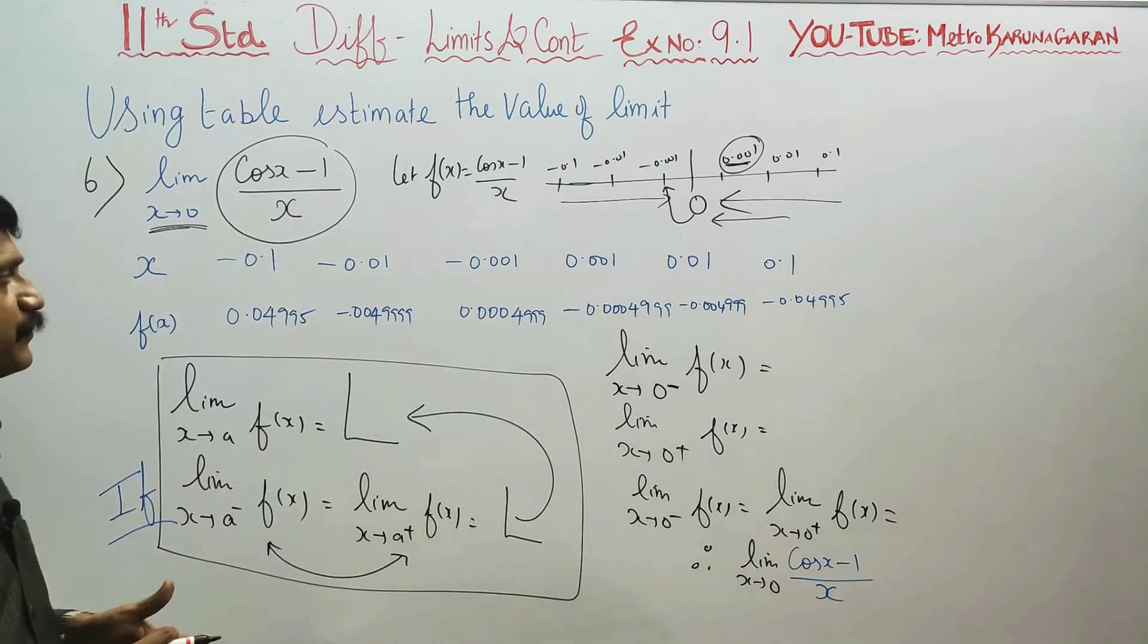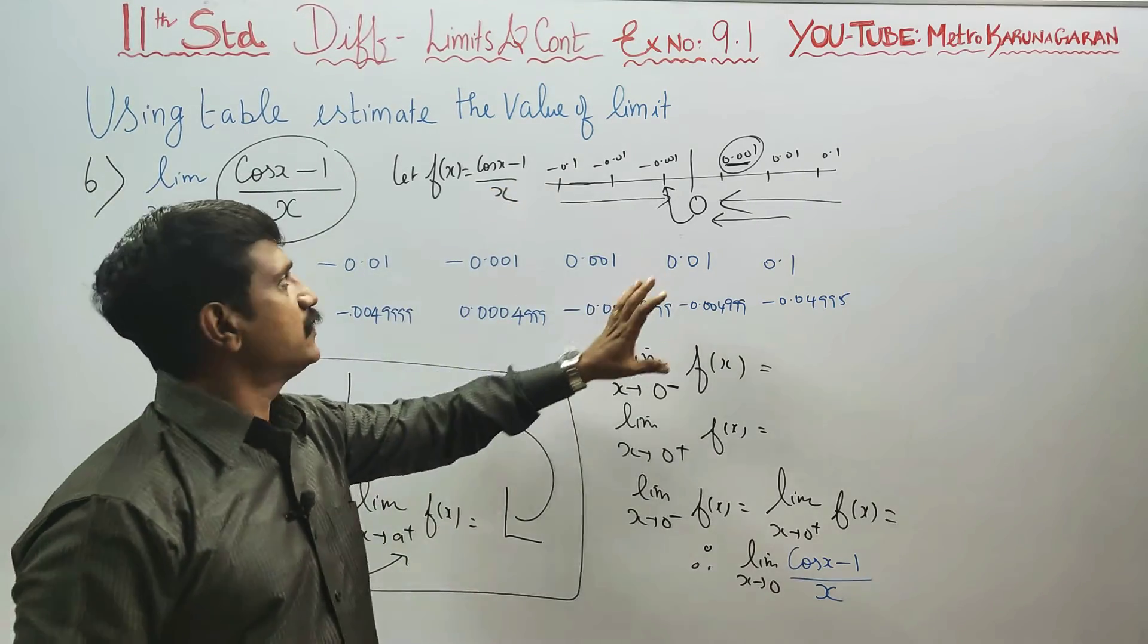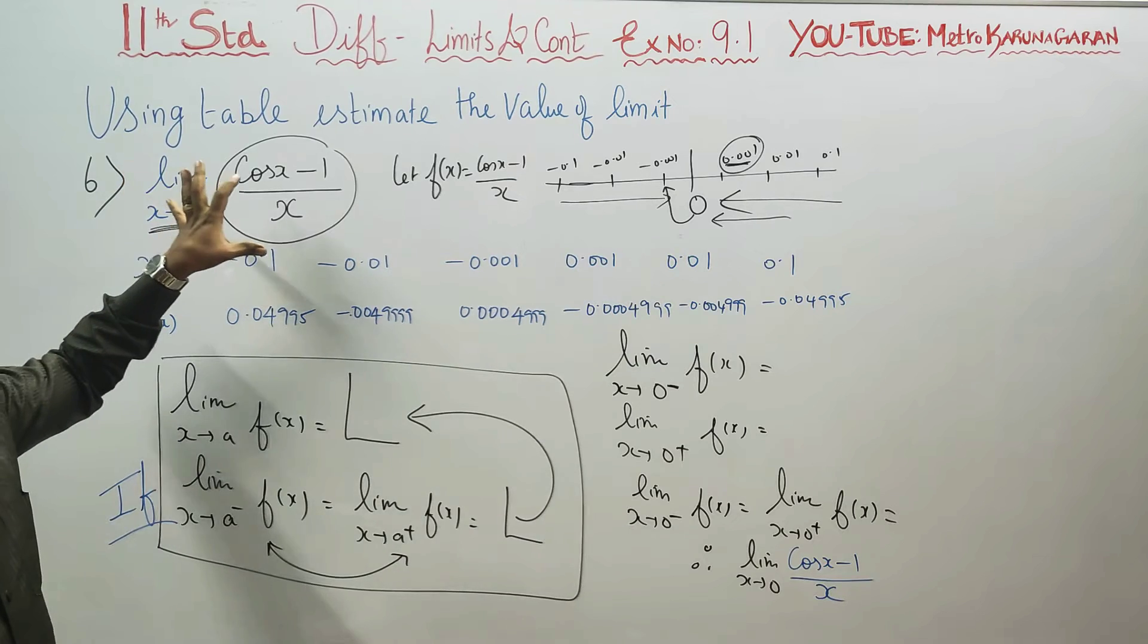In the table, we have the ready-made values. In the table, they are asking us to find the value of this limit.